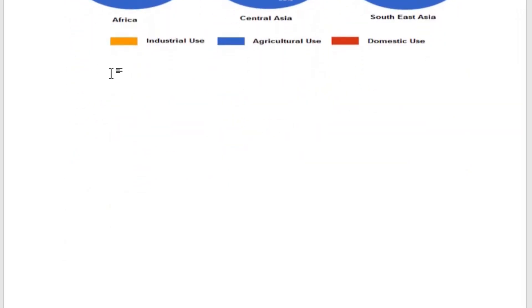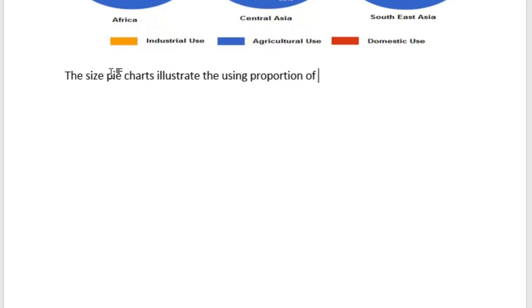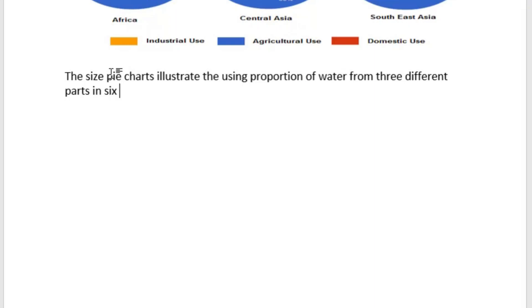The six pie charts illustrate the proportion of water used from three different parts in six regions of the world. As you can see, what I did is just paraphrase the introduction, and now I need to move to the body part.